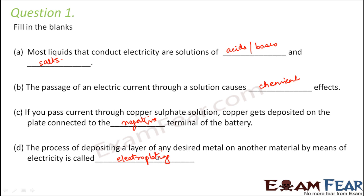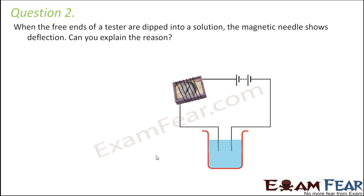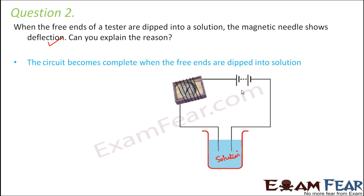Question number two: when the free ends of a tester are dipped into a solution, the magnetic needle shows deflection — can you explain the reason? In this tester, instead of a bulb we have a magnetic needle. Whenever current flows through the circuit, the magnetic needle shows deflection. This deflection means that current flows through the circuit, which proves that the solution is a good conductor.